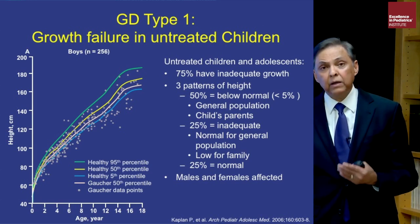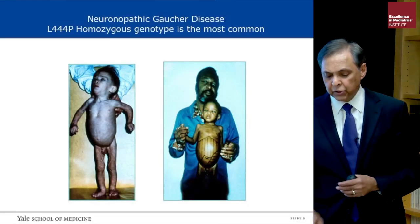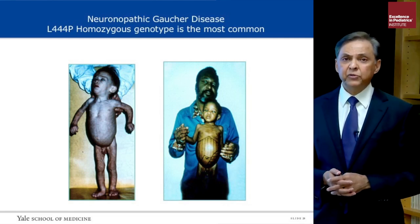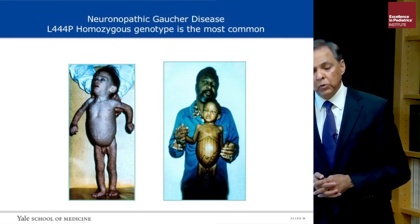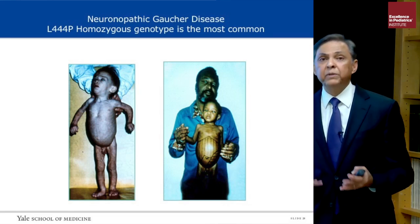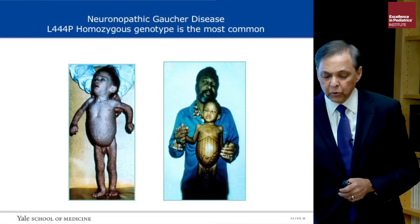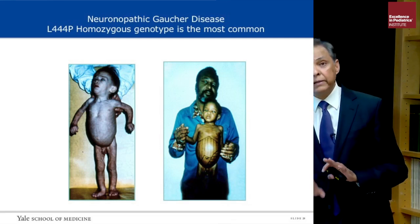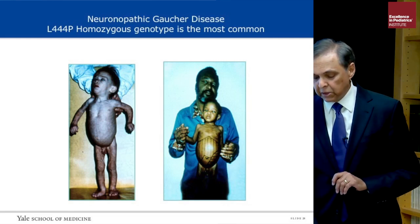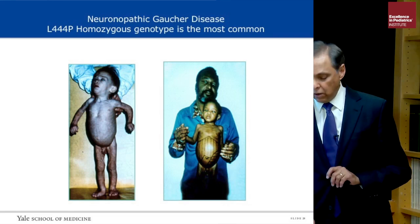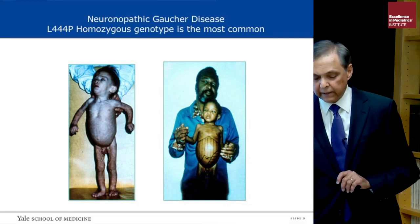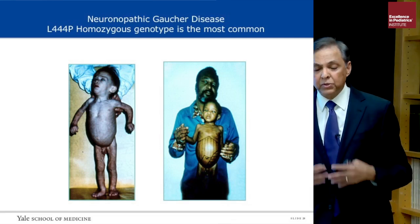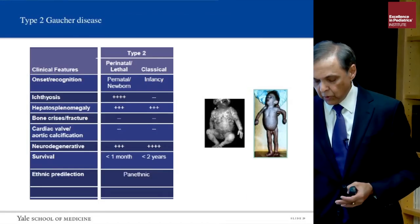The most devastating forms of Gaucher disease are the neuronopathic forms. Type 2 Gaucher disease and type 3 Gaucher disease with relatively mild neurodegenerative disease are shown, including cases involving only oculomotor apraxia, while in other children there are brainstem signs including opisthotonus, head retraction, and swallowing difficulties.